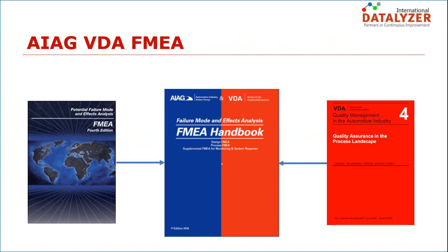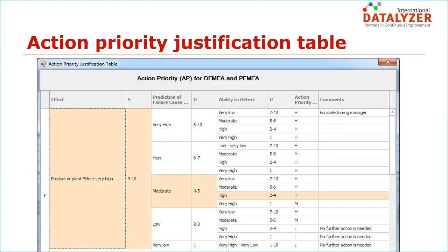In this video, we will show how the action priority works and how it is implemented in Datalyzer FMEA. To assign action priorities, a justification table is applied with categories which cover all possible combinations of severity, occurrence, and detection. Action priorities high, medium, and low are assigned to each combination, and the user can add comments per category. So instead of a number, an action priority will be assigned based on this table.